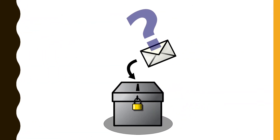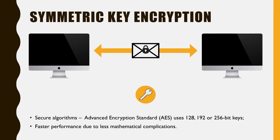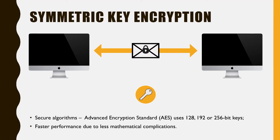Imagine you have a box with a lock and a key that can unlock the box. Anything you wish to protect can be placed inside of that box and only those with a copy of the same key can unlock it. This is essentially how symmetric key encryption works.